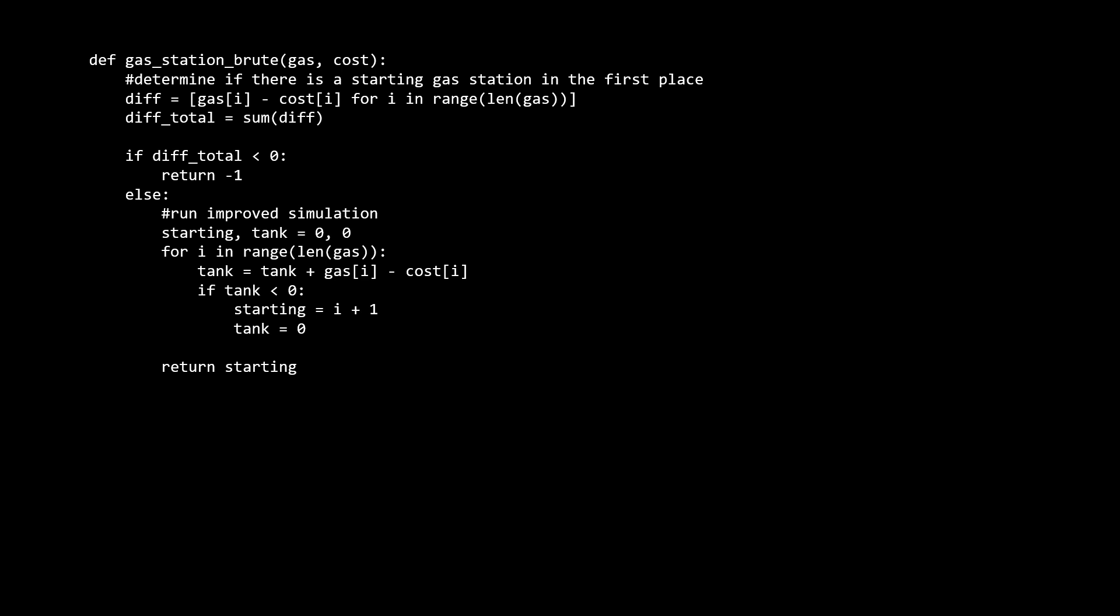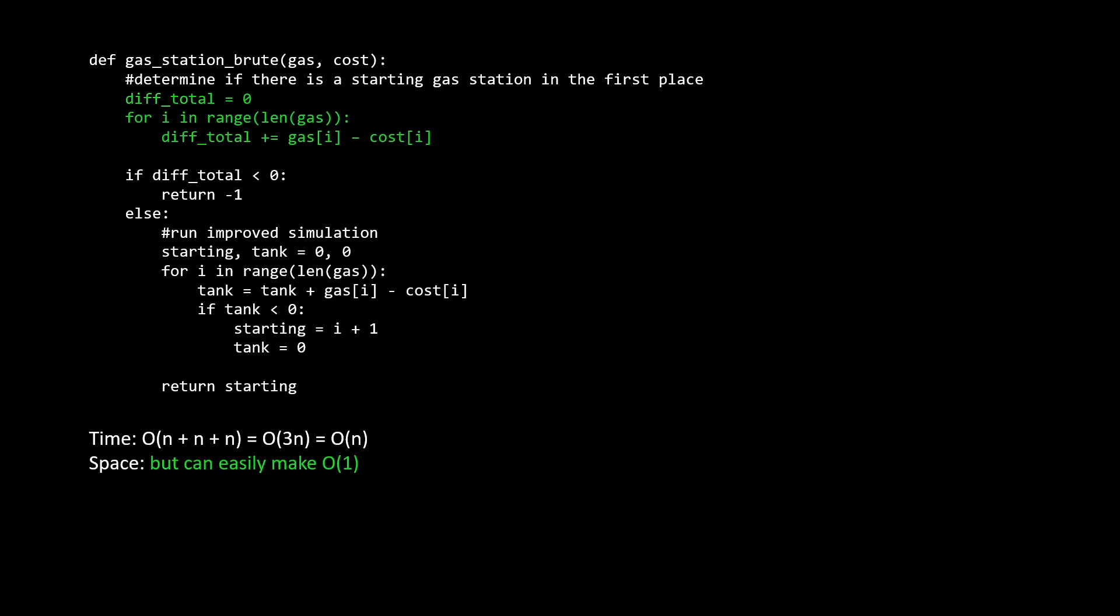For time complexity, we can see that worst case, we have three linear passes. Another linear pass, using the sum function, which internally loops through and adds everything up. And our final linear pass runs our modified algorithm. That is O of 3N, which is just O of N. For space, this algorithm actually uses N space to store the diff array. But I hope you can easily see how we could just use a variable and calculate this diff total on the fly for a constant space solution. So now that we've discussed time and space, that's really it for this solution.